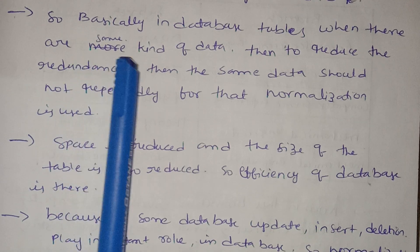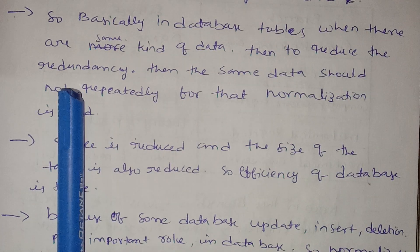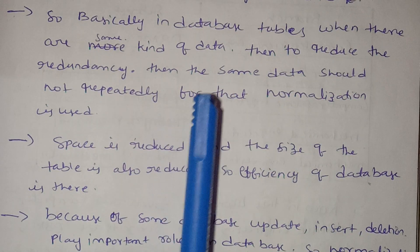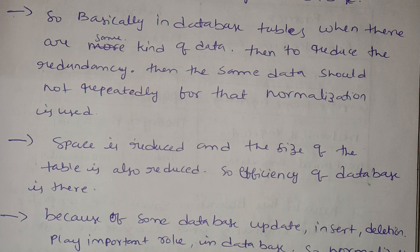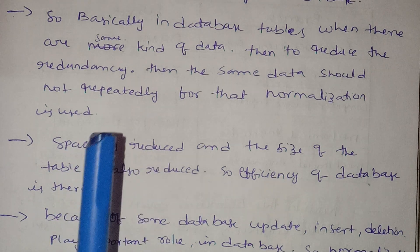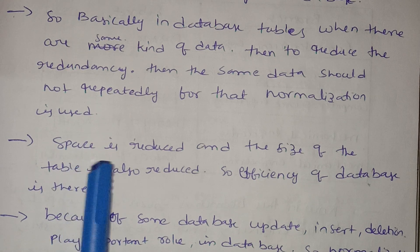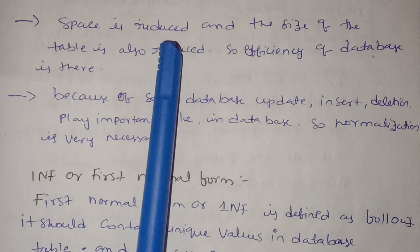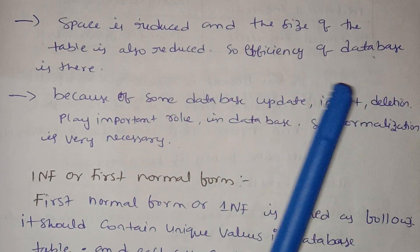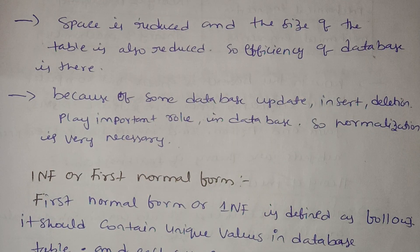What is normalization? If there is the same kind of data, then to reduce the redundancy, the same data should not be repeated repeatedly — for that, normalization is used. The database table has the same information, so we can use normalization. Space is reduced and the size of the table is reduced, so the efficiency of the database is improved.